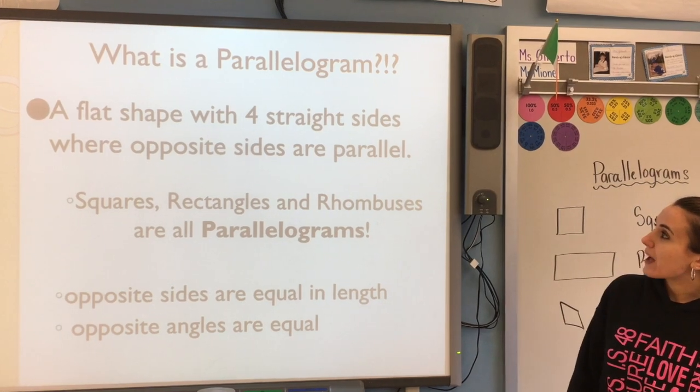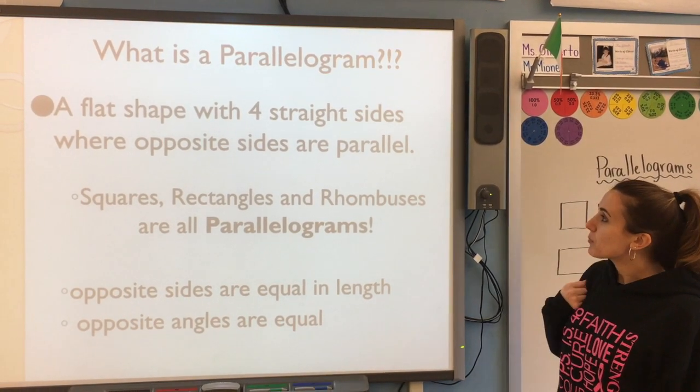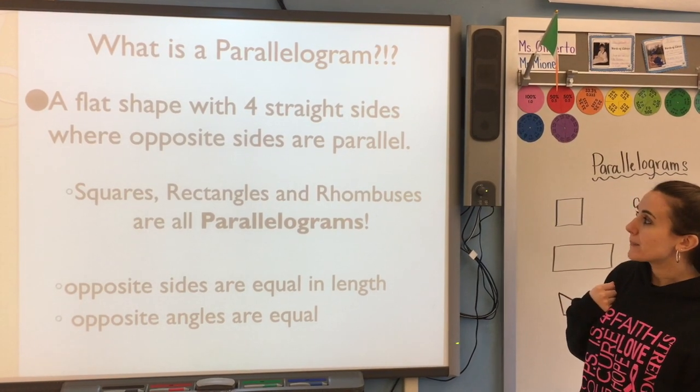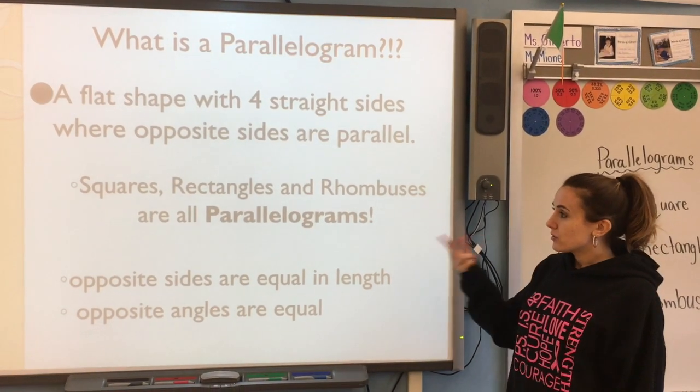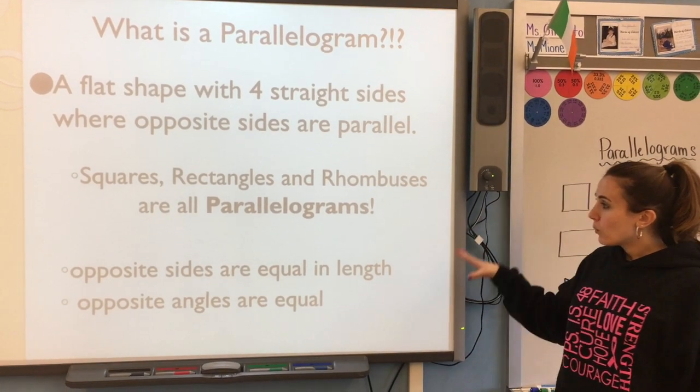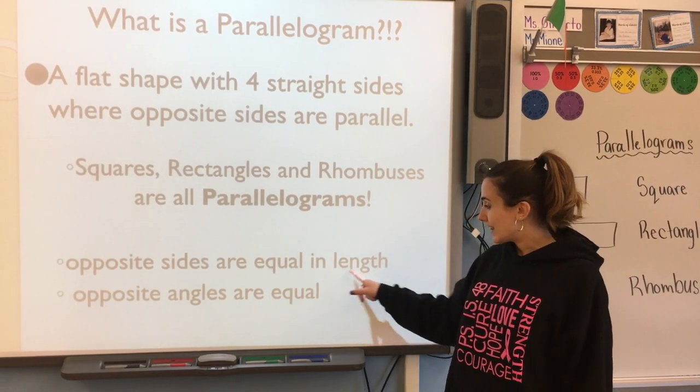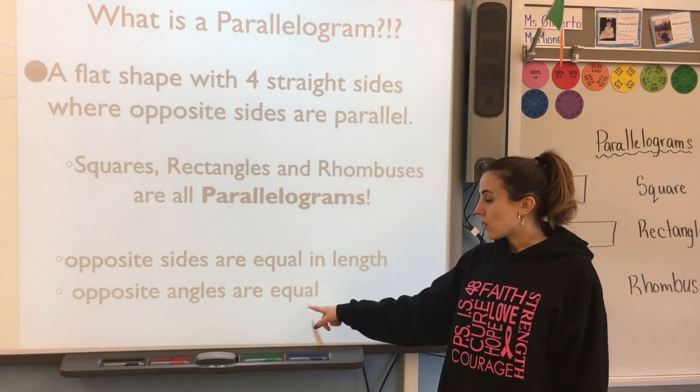Just like we have polygons, we also have a parallelogram. So what is a parallelogram? It's a flat shape with four straight sides, where opposite sides are parallel. Some of those shapes would be a square, rectangle, rhombus. What makes them the parallelogram is their opposite sides are equal in length, and their opposite angles are also equal.